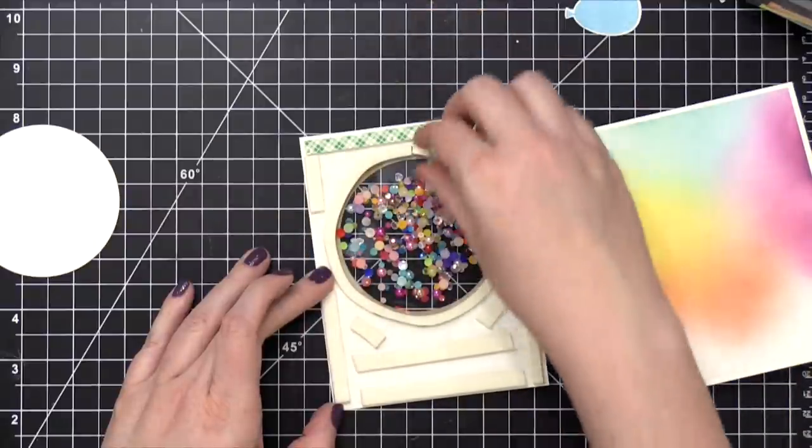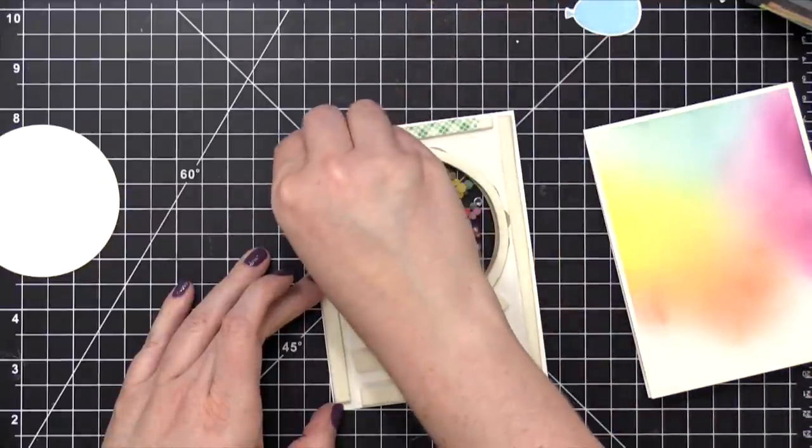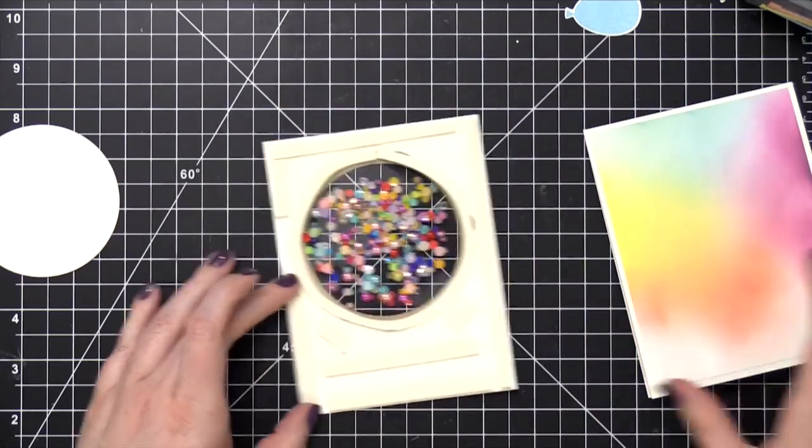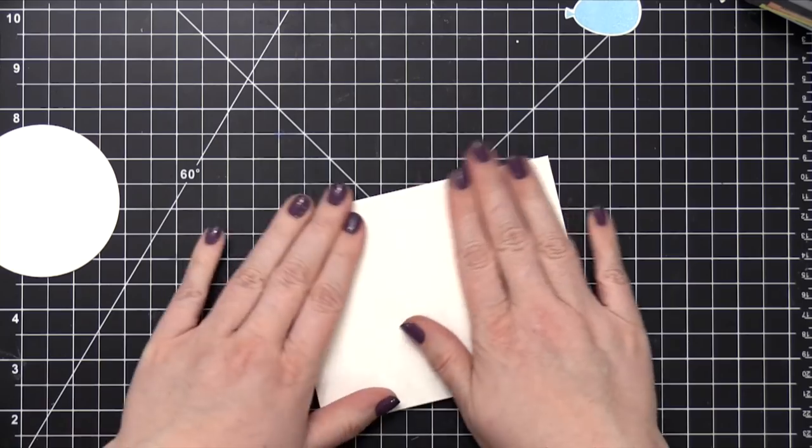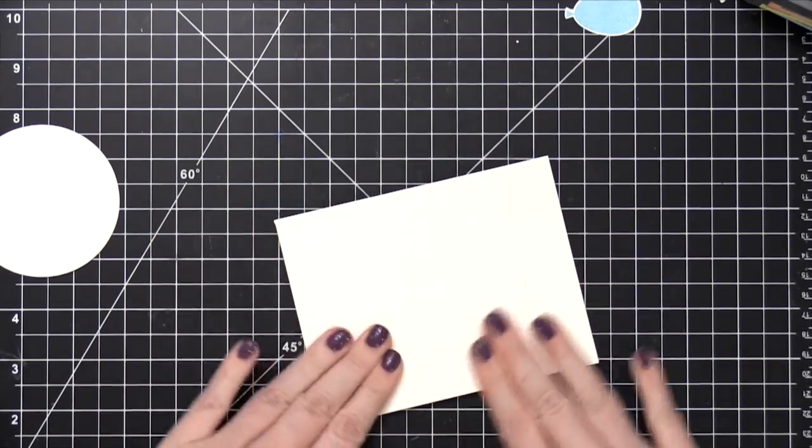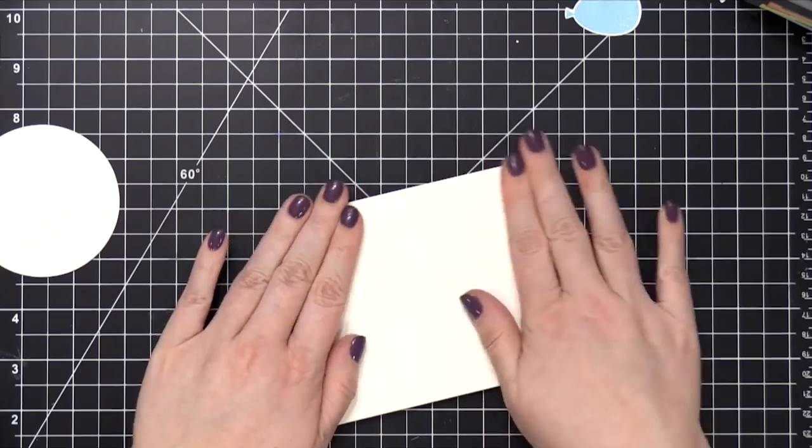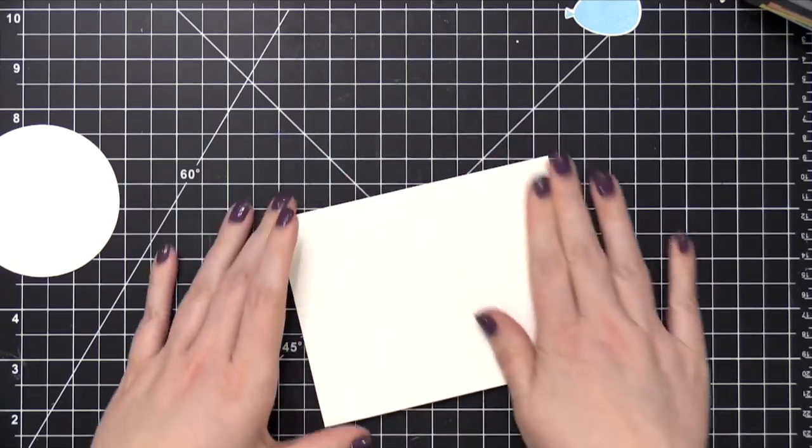So I'm removing the backing on the foam tape, and then I'm going to very carefully turn my card front over and line it up with that window shaker piece. Press it down with my fingertips, and then I'm left with a really fun shaker card.